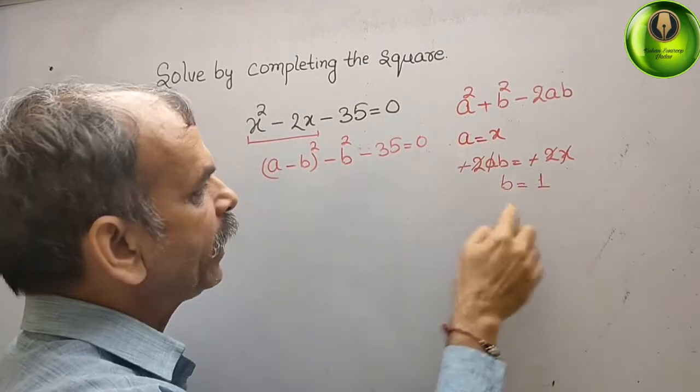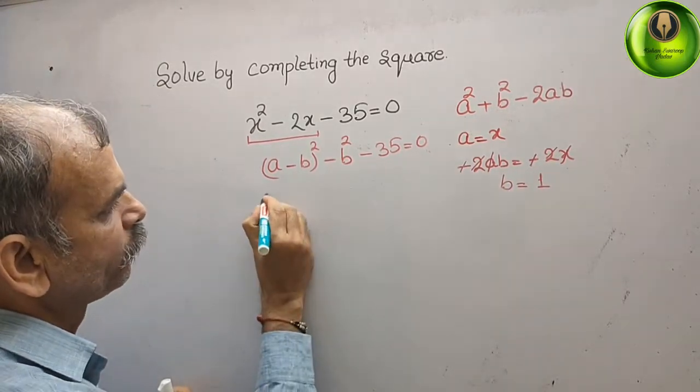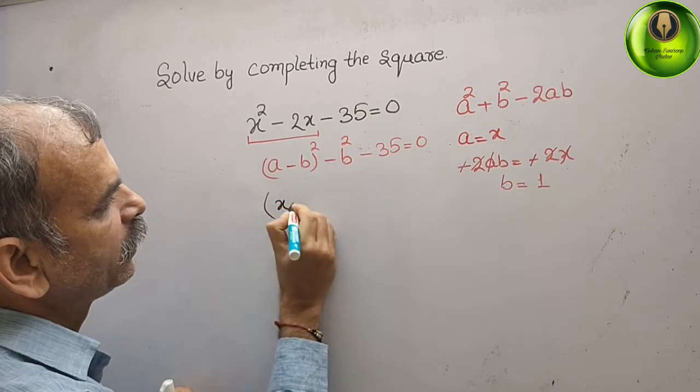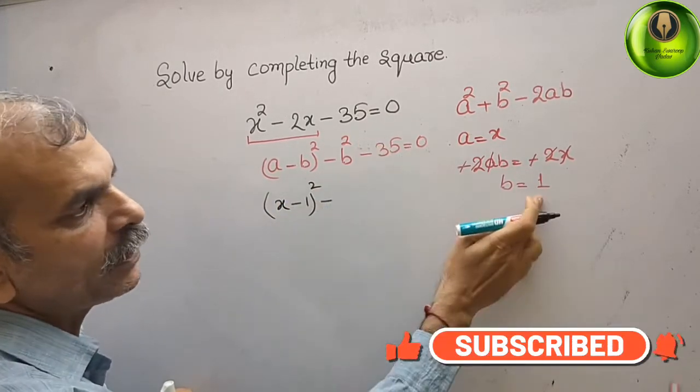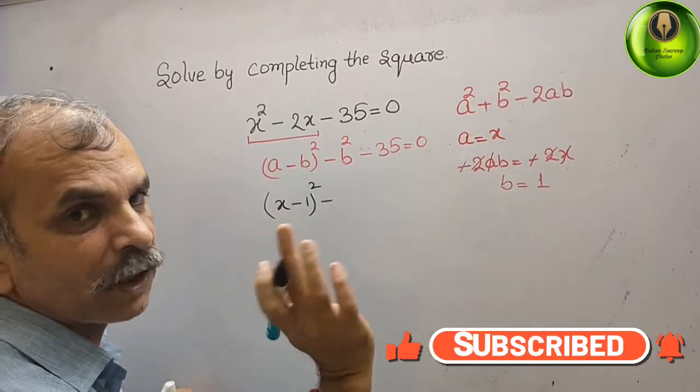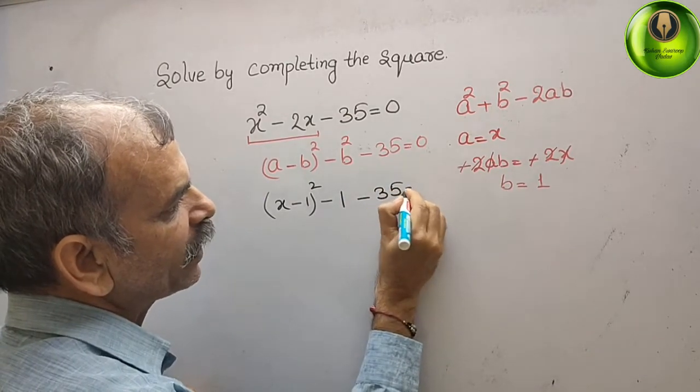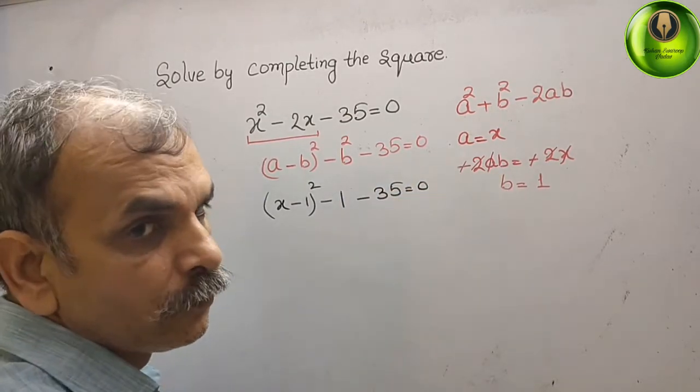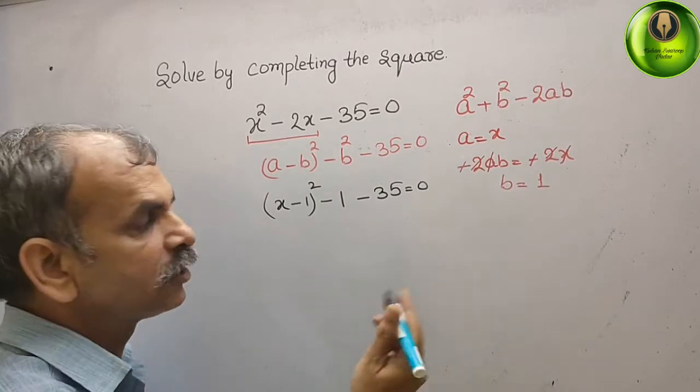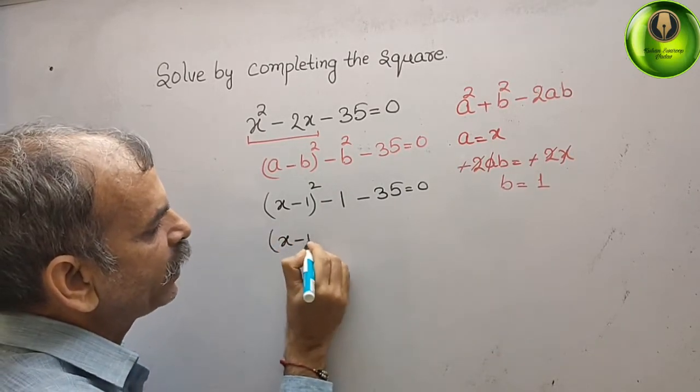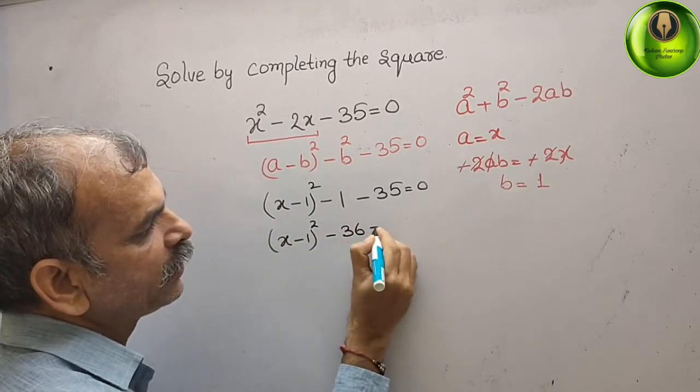Now substitute this a and b value here. What we will get? We will get x minus 1 whole square minus b square is 1. Now, 1 square is 1 only, minus 36, 35, that gives you 0. That means minus 1 minus 35 is minus 36. That we will write, x minus 1 whole square minus 36, that gives you 0.